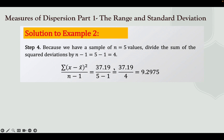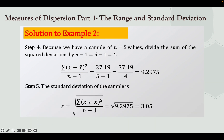which is 37.20, divided by 4, giving us 9.30. In step 5, we take the square root of 9.30. The square root is approximately 3.05. So our sample standard deviation is 3.05.